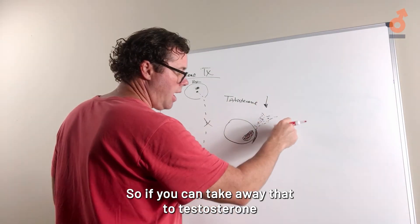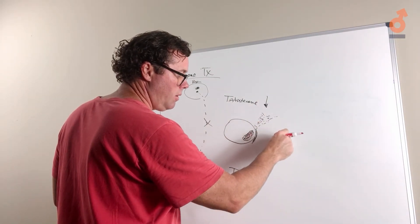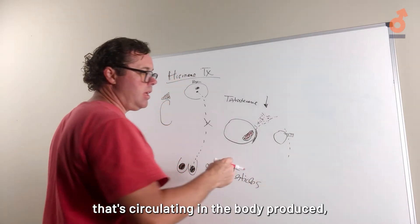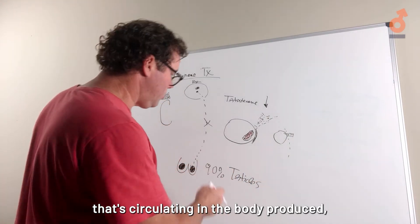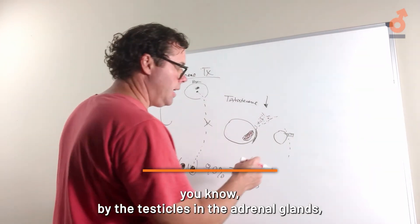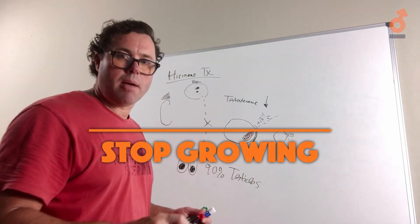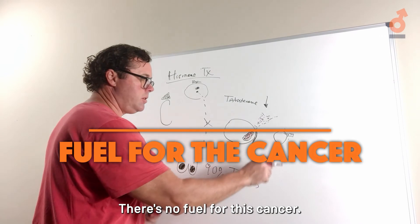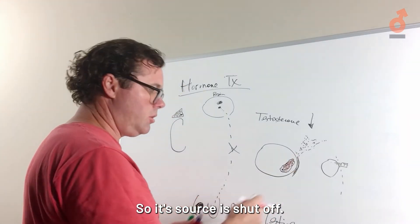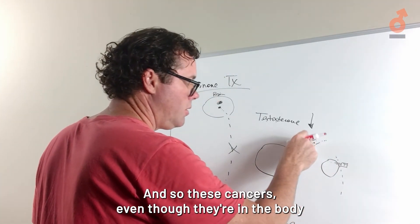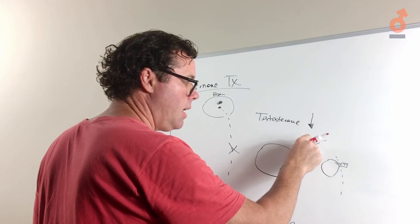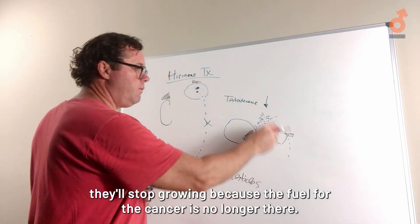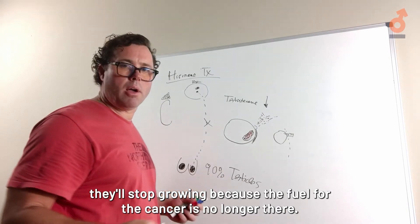If you can take away the testosterone that's circulating in the body, produced by the testicles and the adrenal glands, this cancer will stop growing because there's no fuel for the cancer. The source is shut off, so these cancers, even though they're in the body, will stop growing.